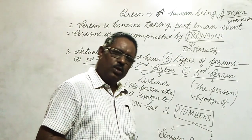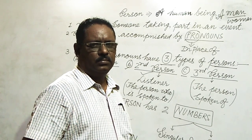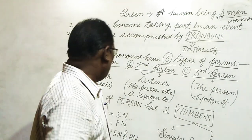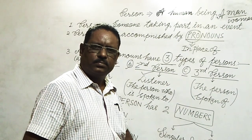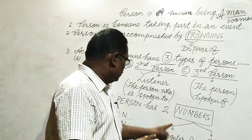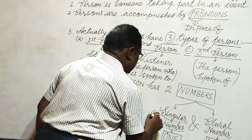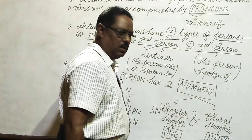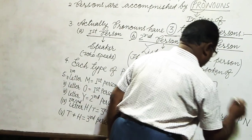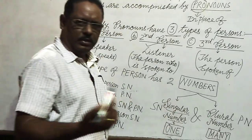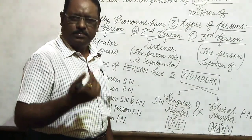We have two numbers. All these persons have two numbers: singular number, SN, and plural number, PN. Singular number means one, and plural number means many — more than one.